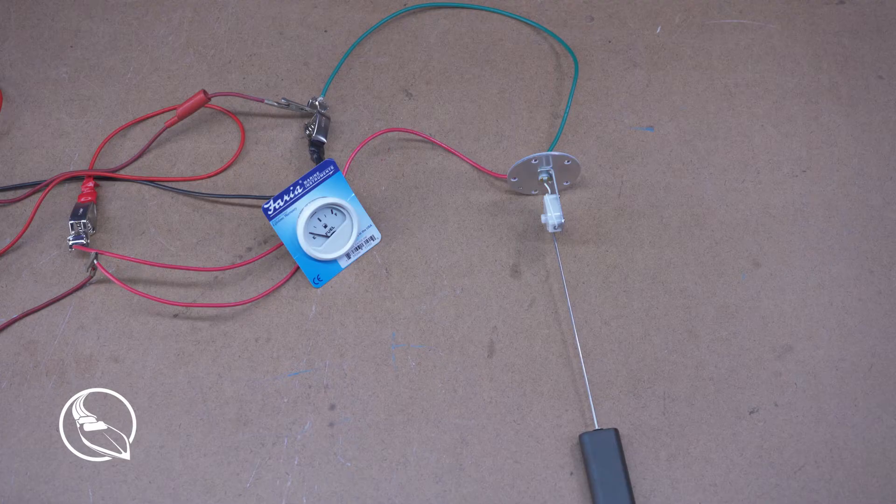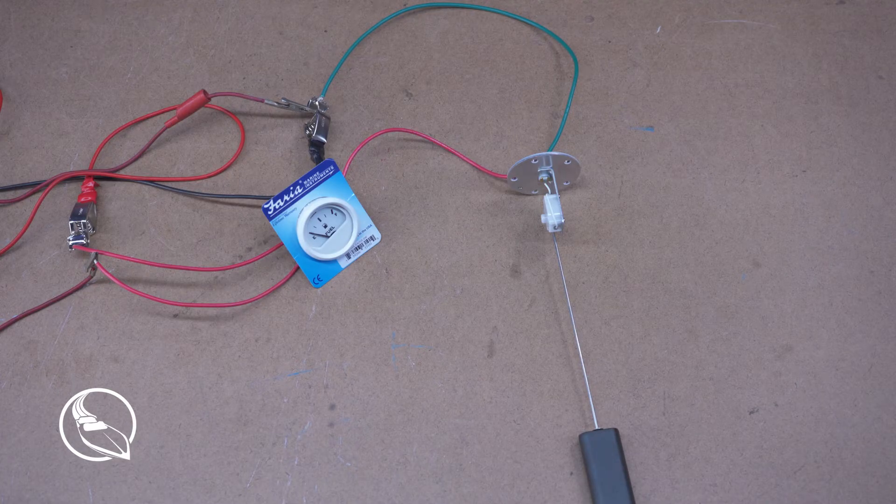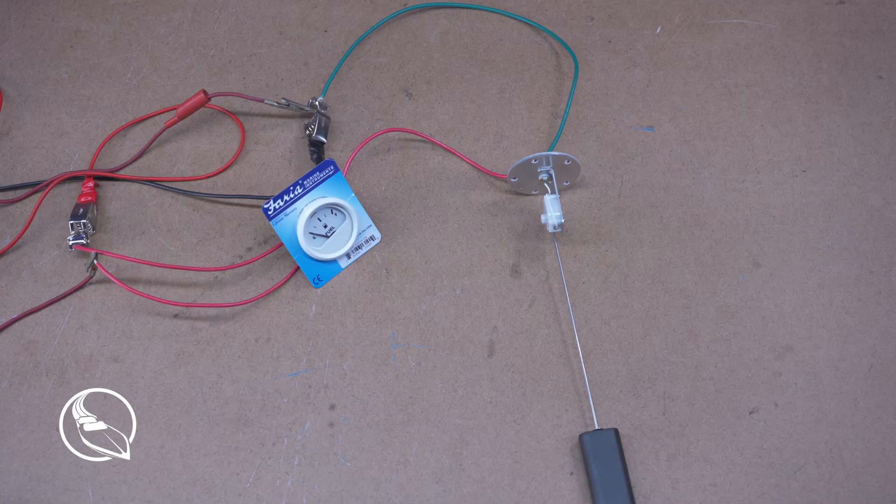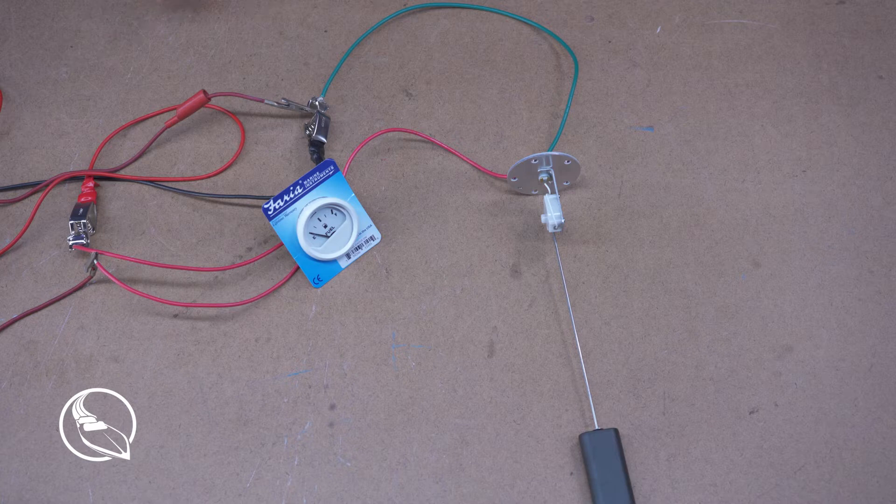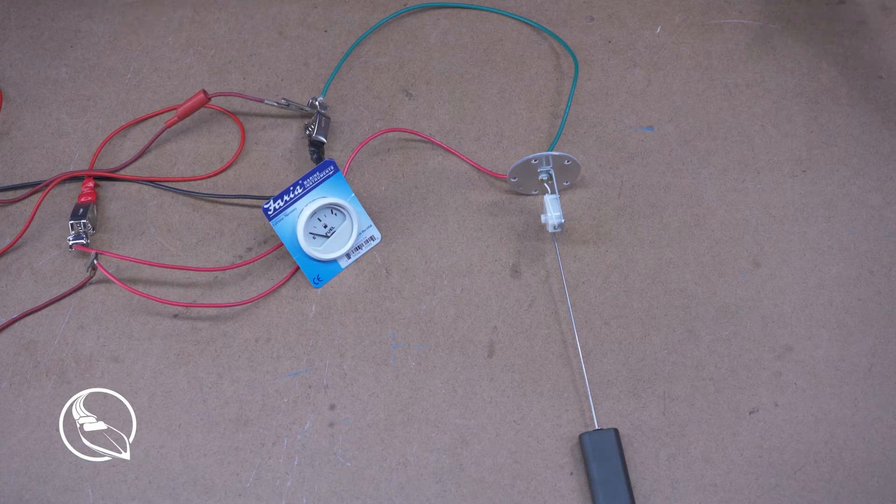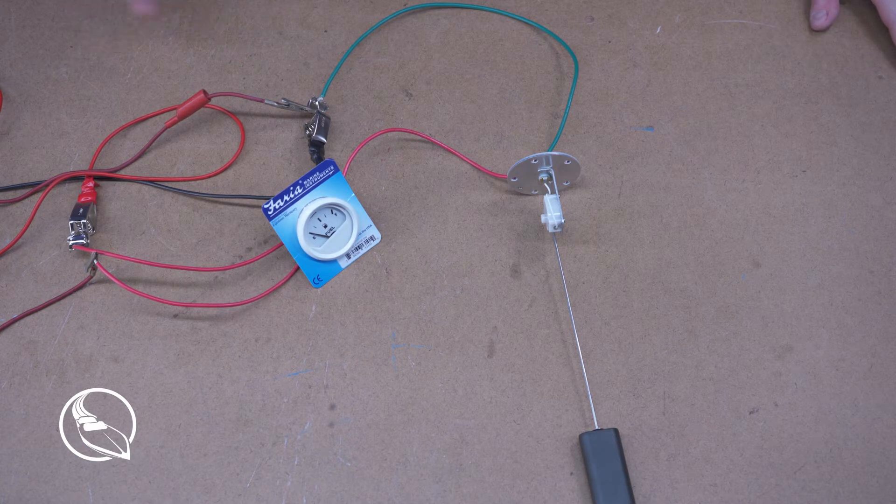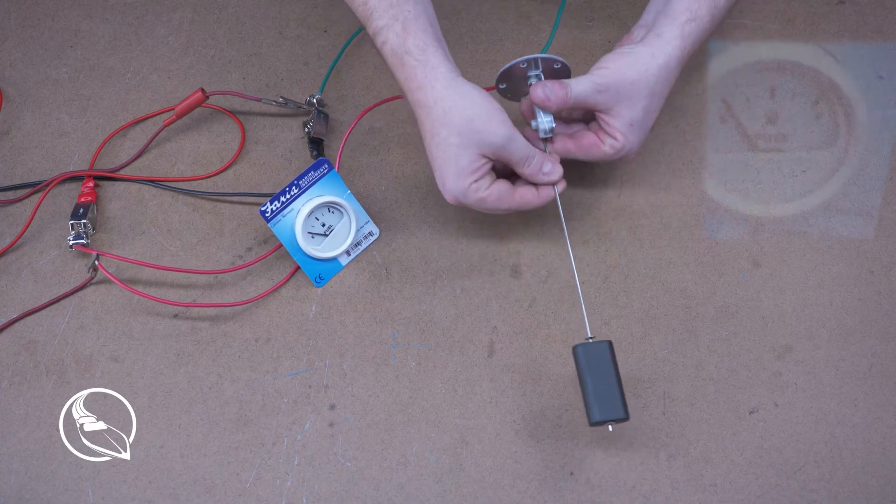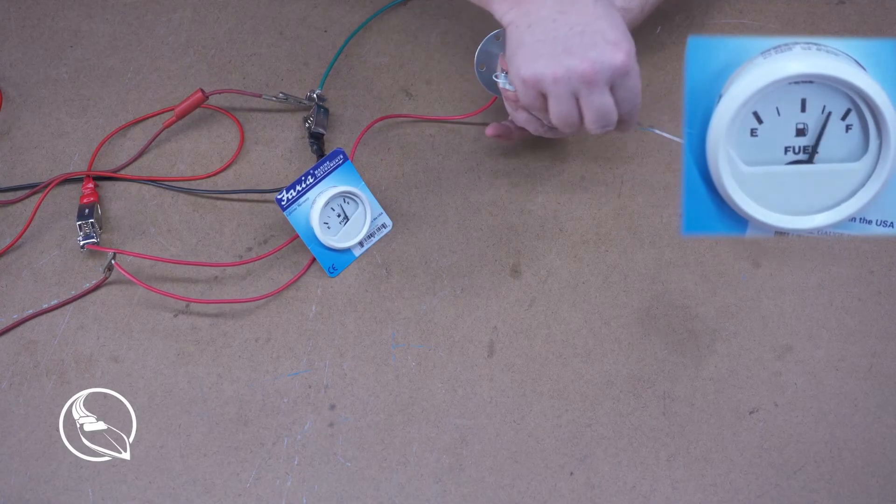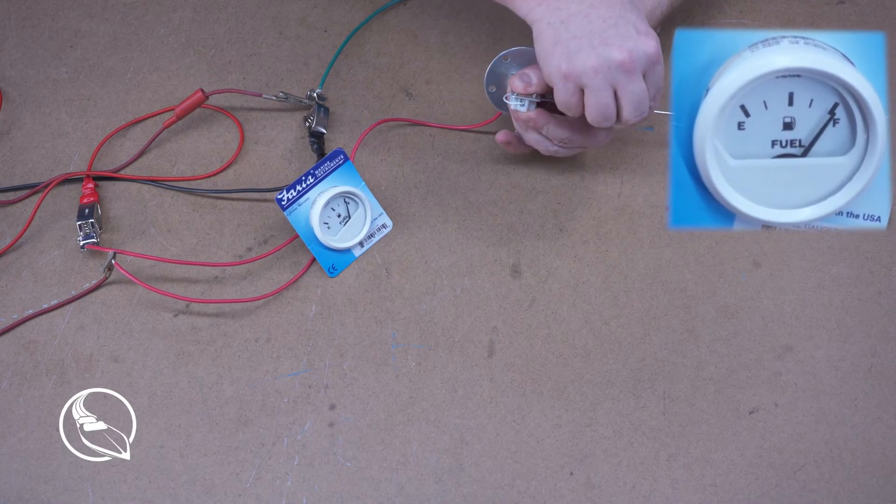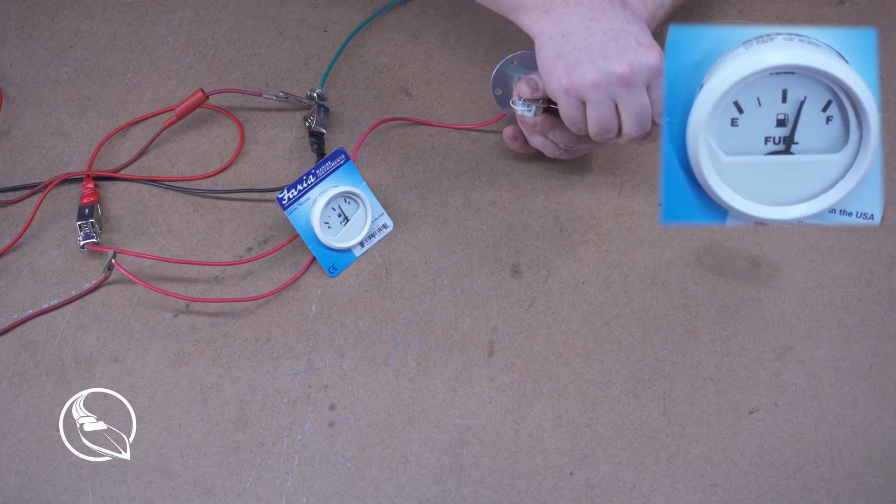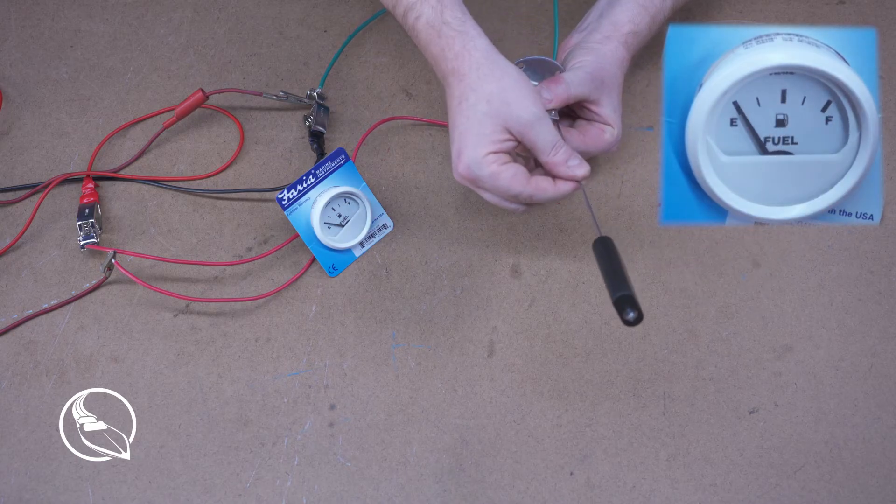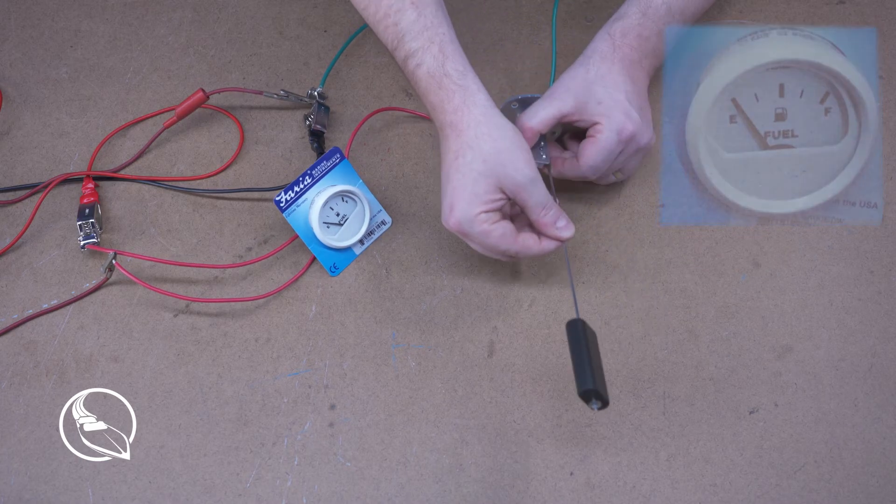The final step in this process of troubleshooting your fuel gauge would be to test the sender. So at this point, we've ruled out any issues with the battery bank or the gauge or the wiring. So now we are down to the sender and identifying if that's the issue. There are two ways that you can do this. You can pull the sender out of the tank. This is probably the easier way. And just move the arm of the sender and see if it causes any reaction on the gauge. You can see it is moving the needle. So we know that we have a functioning sender. And we're good to go.